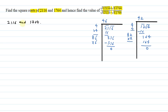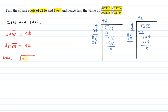Using the long division method, you can see that the square root of 2116 is equal to 46, and the square root of 1764 is 42. The first part of the question is now complete. Now for the second part: evaluate the expression with square root of 0.2116 plus square root of 0.1764 upon square root of 0.2116 minus square root of 0.1764.